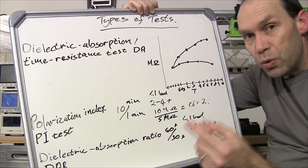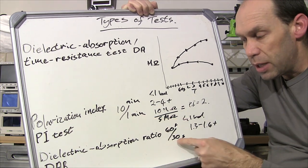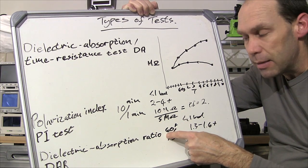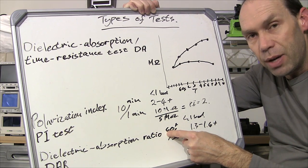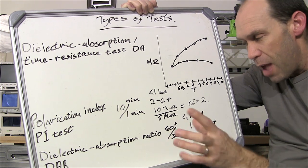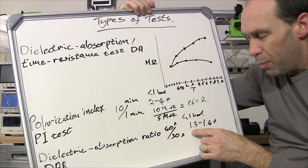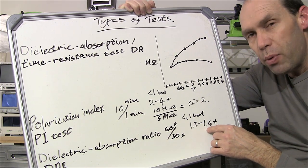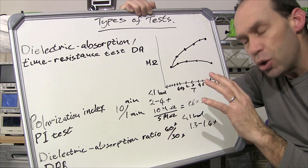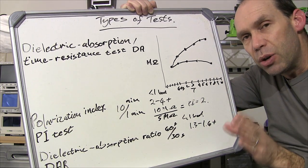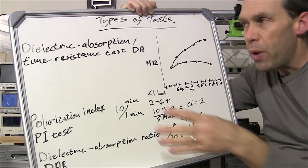What you do is your first reading as opposed to being at one minute you take it 30 seconds and your second reading you take it 60 seconds. You divide your 60 second reading by 30 seconds and there what you're looking for again anything less than one is not good and if you're in the ballpark of 1.3 to 1.6 you're kind of okay good. Anything above 1.6 you're sitting with potentially good insulation.